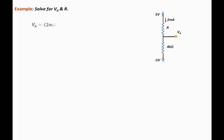Now we can state that VA is equal to I times R plus negative five. As we stated earlier, this comes from Ohm's law. This equals eight minus five, which equals three volts.